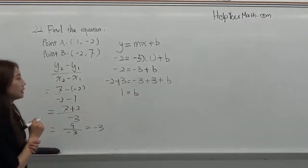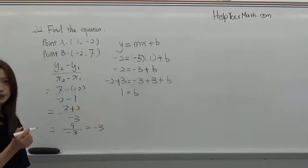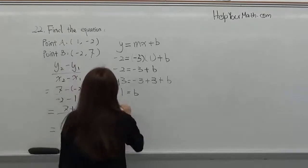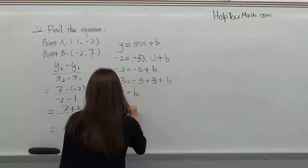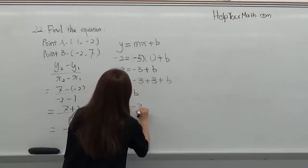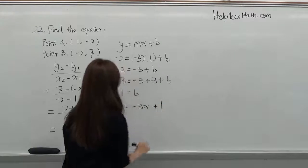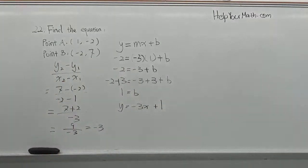So we found b equals 1. Then finally we will just write the equation. The equation should be y equals negative 3x plus 1. And that's it.